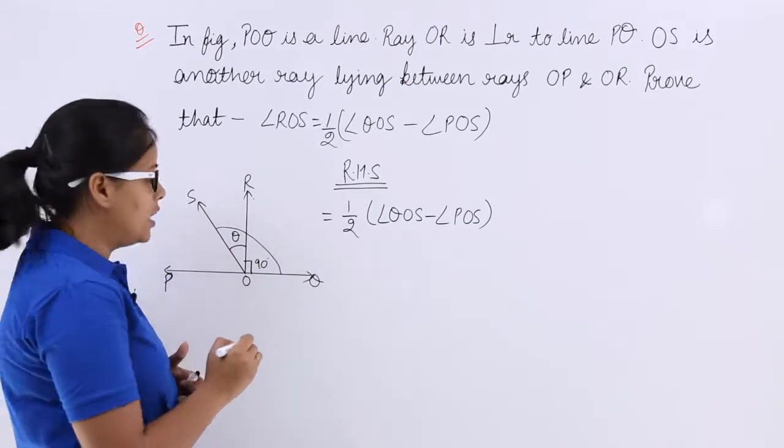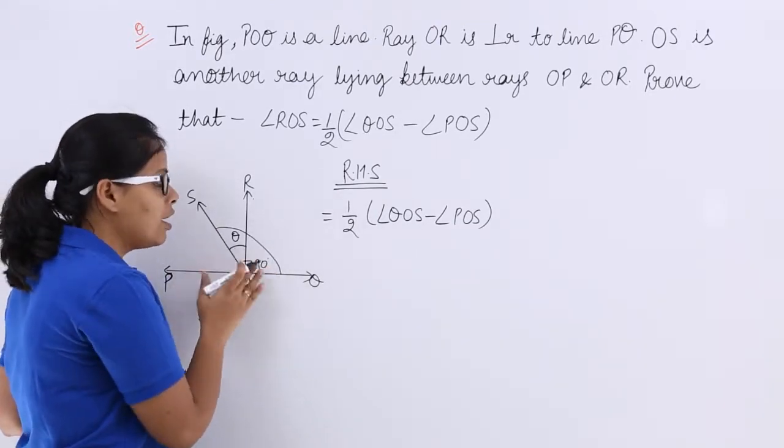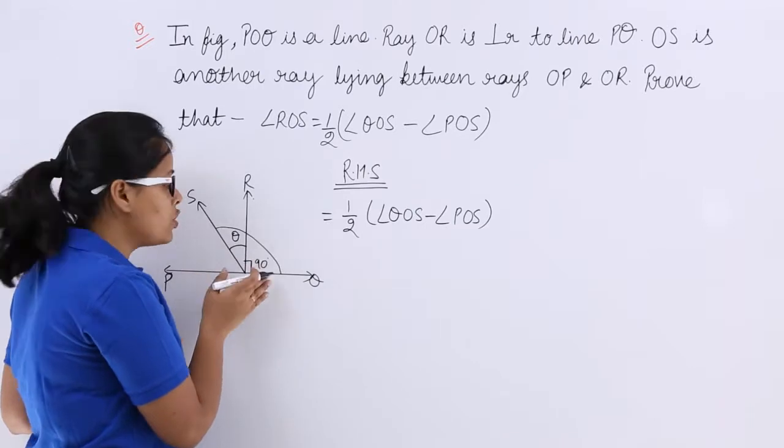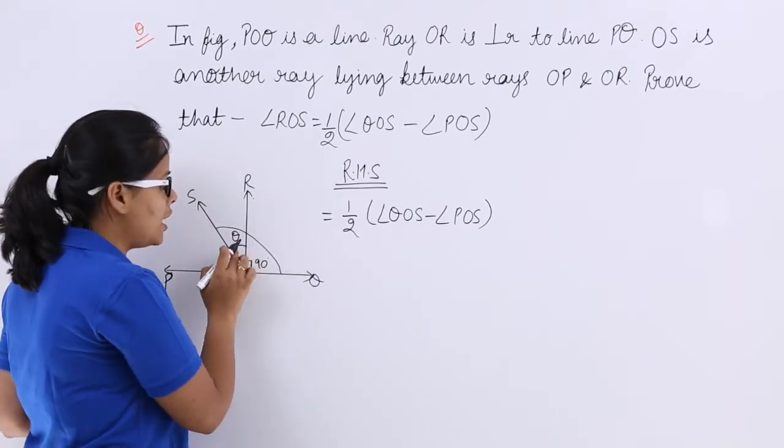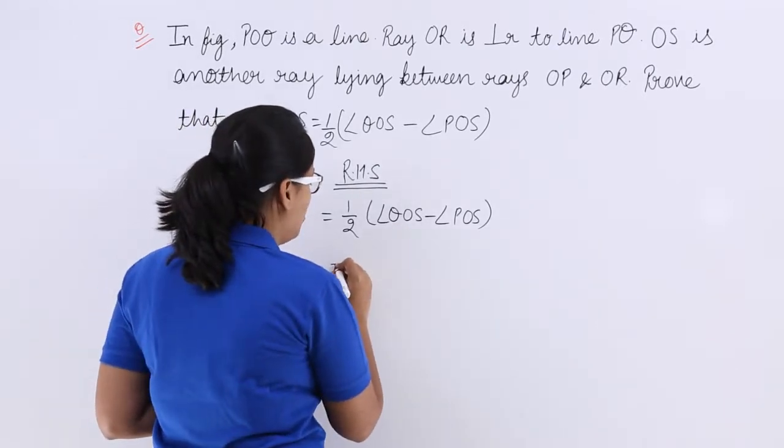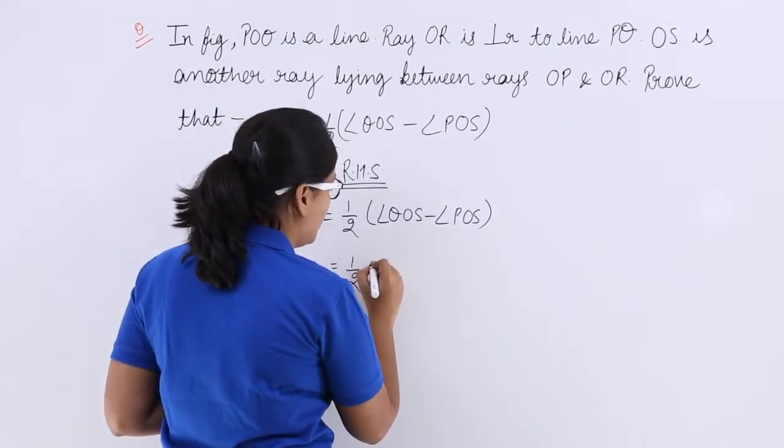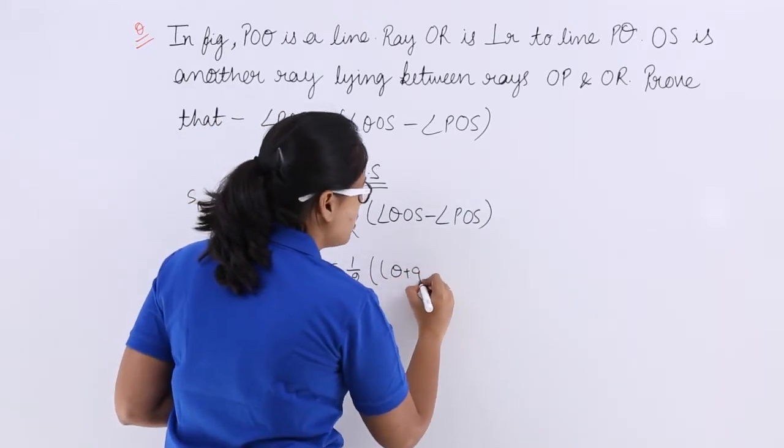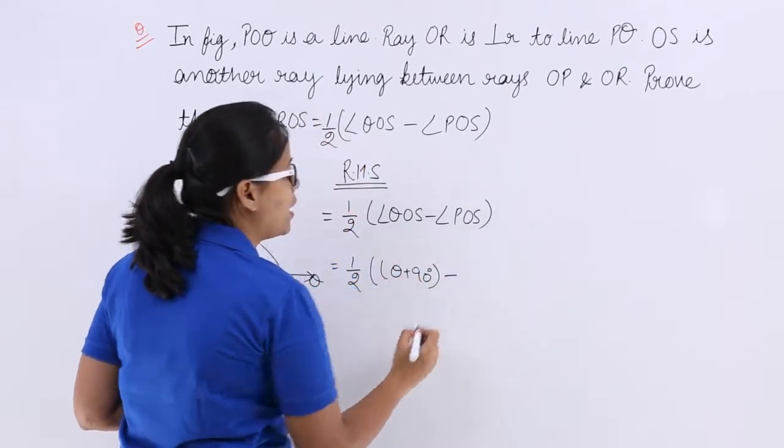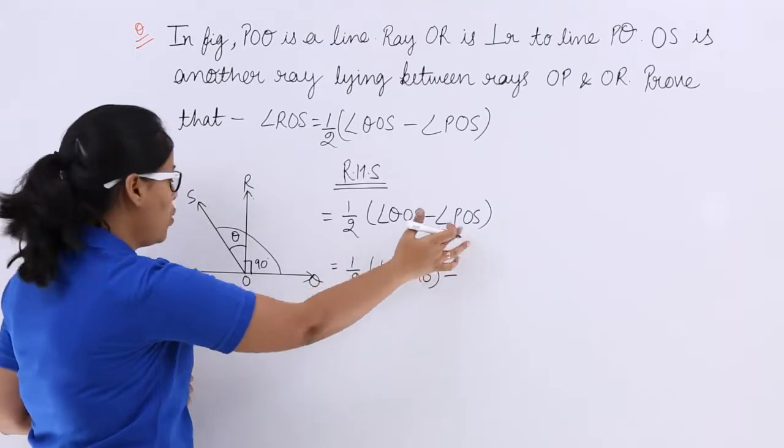Always draw an angle like this and then see what are the angles inside this which are constituting this whole angle. This is 90 degree plus theta degree. So you will substitute this value here, coming out to be theta plus 90 degree minus. Now see the value for POS.